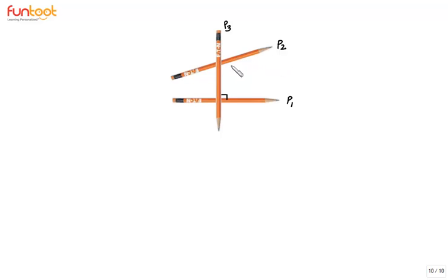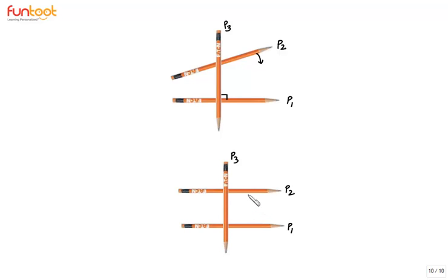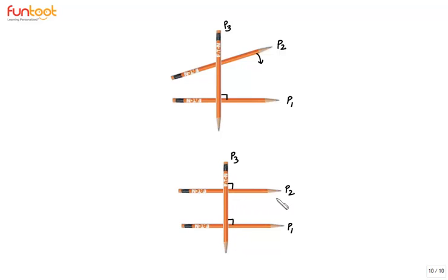To make P3 perpendicular to P2, we rotate P2 in the downward direction so that P2 is parallel to P1. Now, if this angle is 90 degrees, we can see that this angle has also become 90 degrees. So when P1 and P2 are parallel, and P3 is perpendicular to P1, then P3 is perpendicular to P2 also.